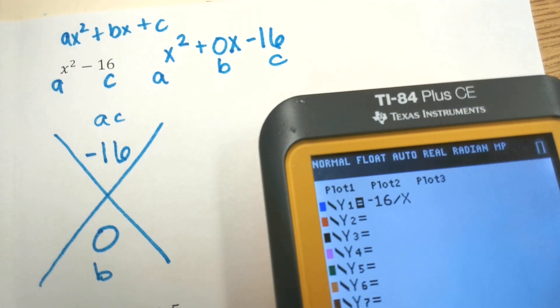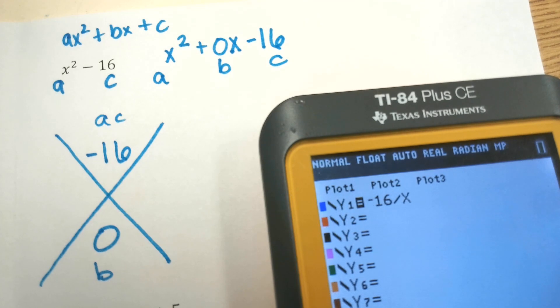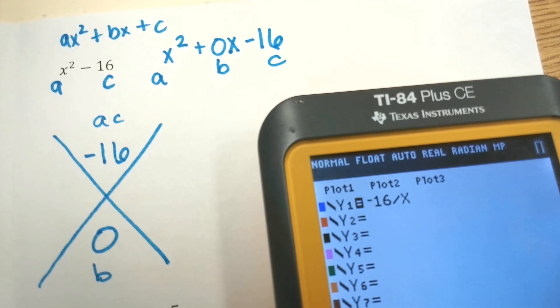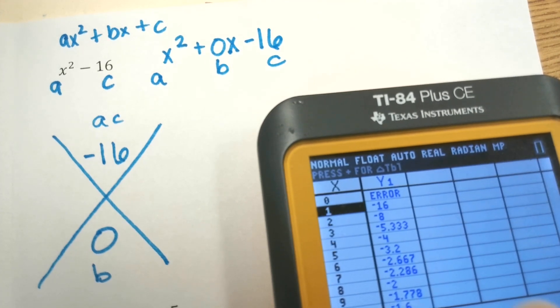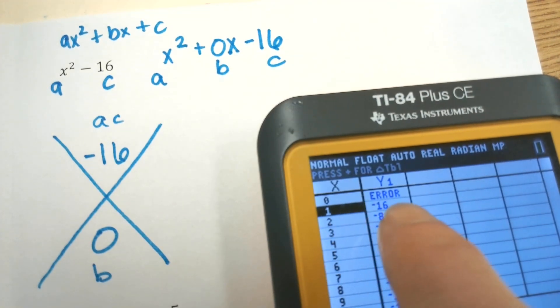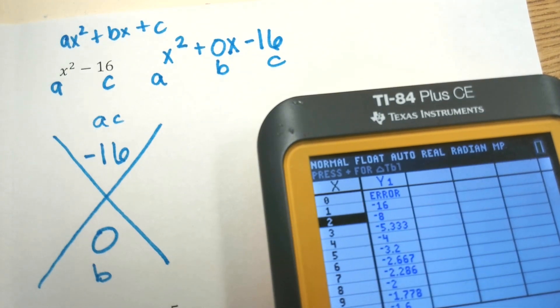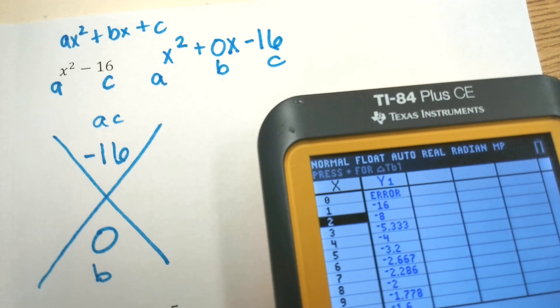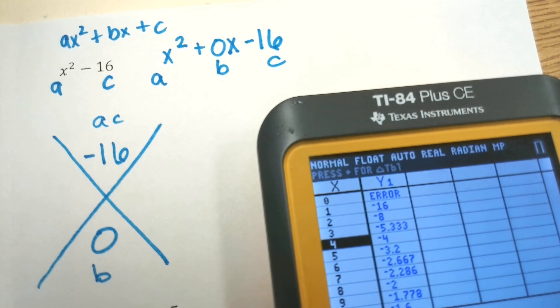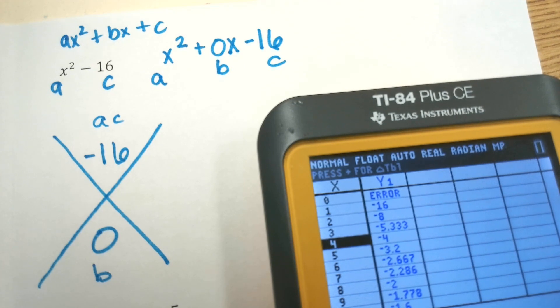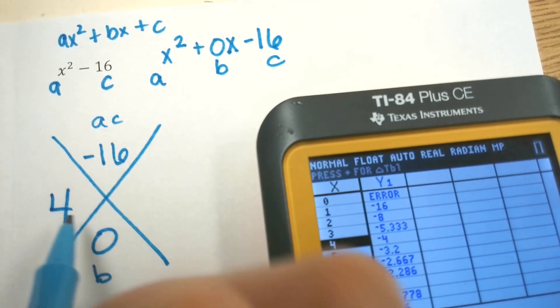So I'm going to put in y = -16/x. If you don't have a calculator, go grab it now. I'm going to put it in, and then look at my table. I'm going to look at my numbers. So 1 and -16, if I add those, I'm never going to get 0. 2 and -8? Nope. What about 4 and -4? Yeah.